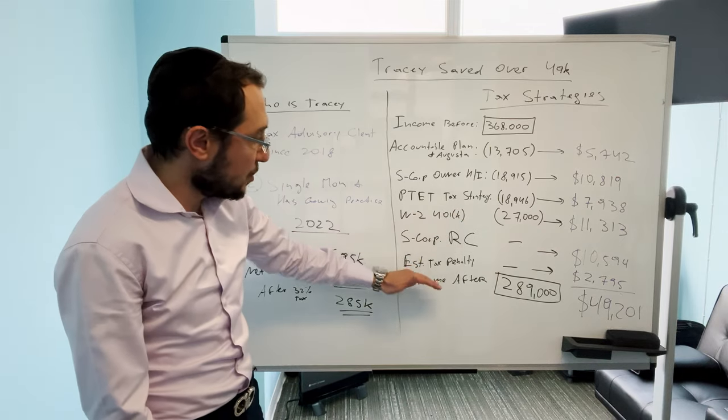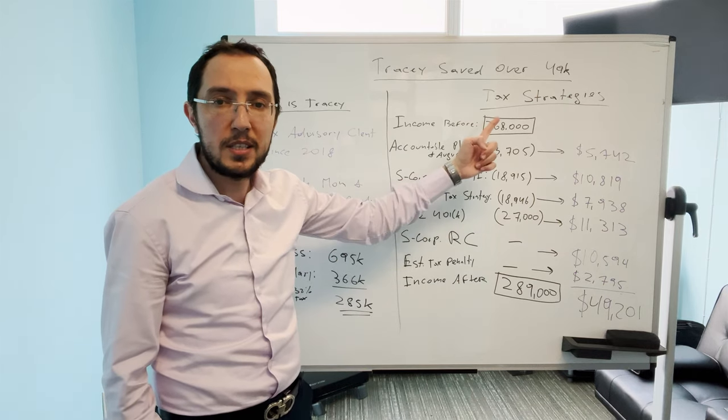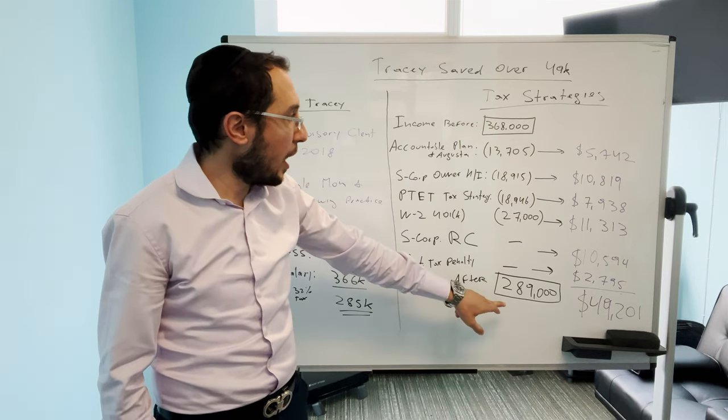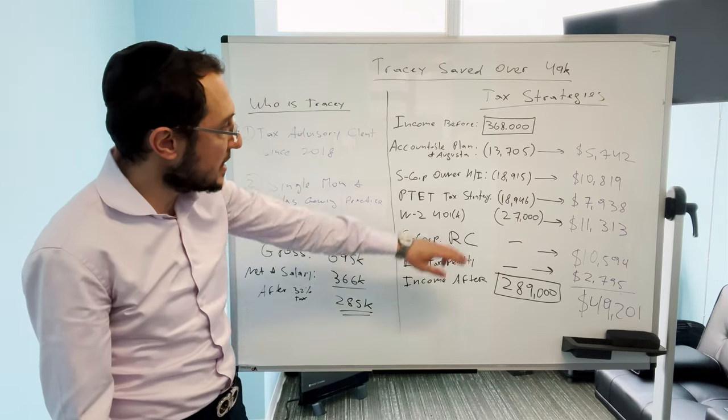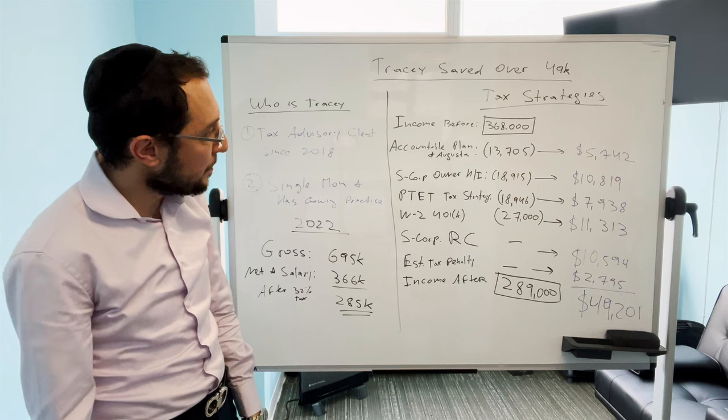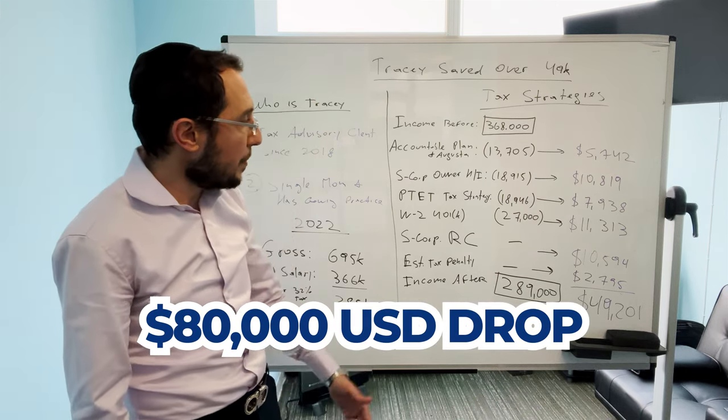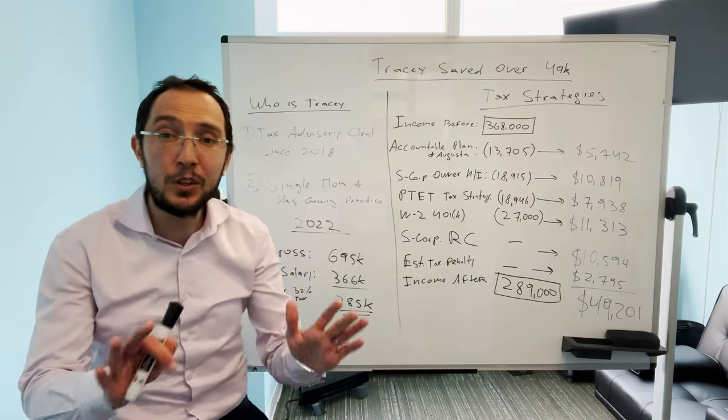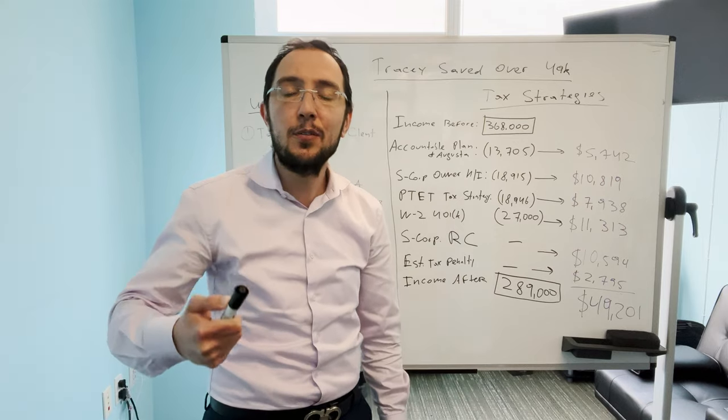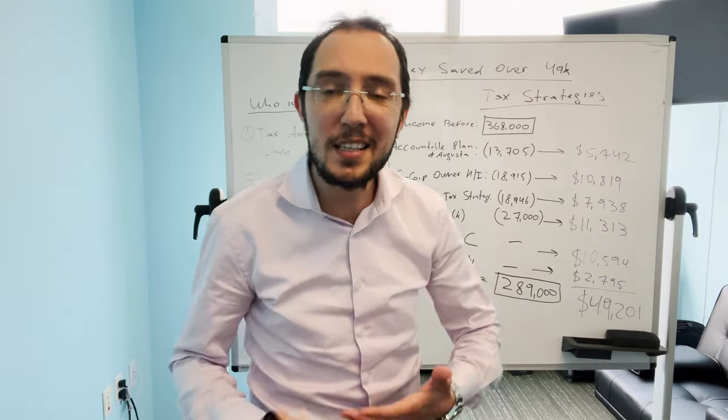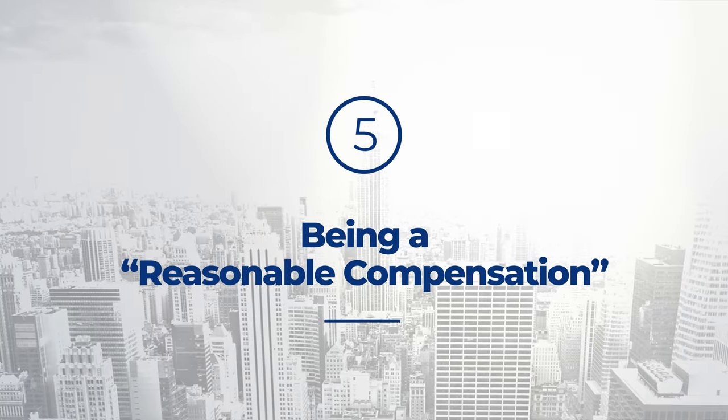Now, before we continue into these next two tax strategies, her income before these deductions was $368,000. We dropped her income to $289,000. That's about $80,000 drop from these deductions but we don't end there because it's not only the deductions that save you money on taxes, there's some other things that save you money on taxes when you're an S-corporation owner. One of them is reasonable compensation.